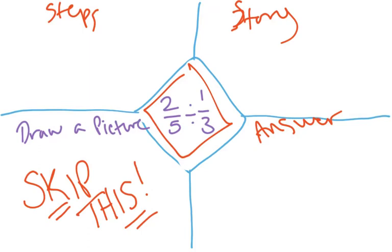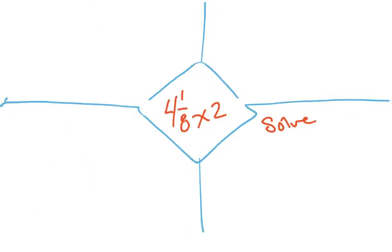I will, however, do the second one with you, solving. When we are multiplying, we need two fractions. So, to solve it, I'm going to say that 4 and 1 eighth times 2.